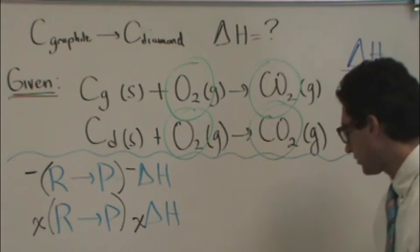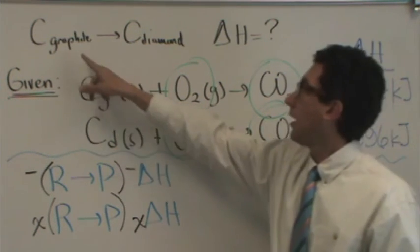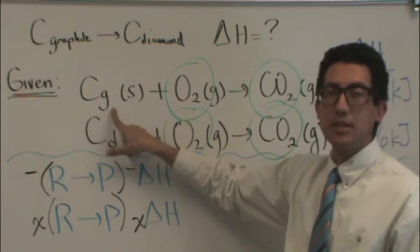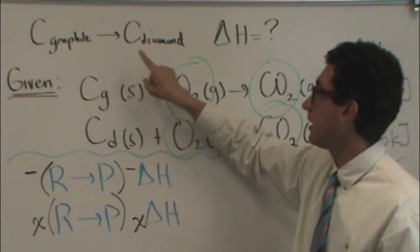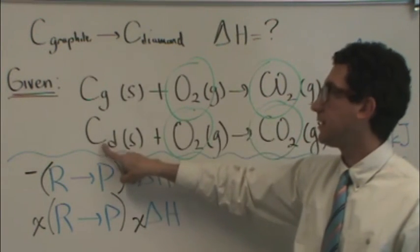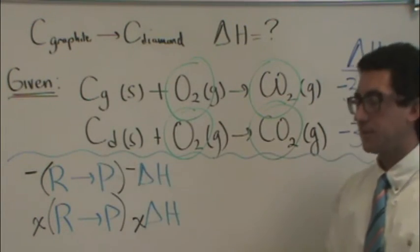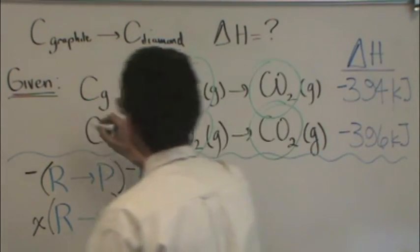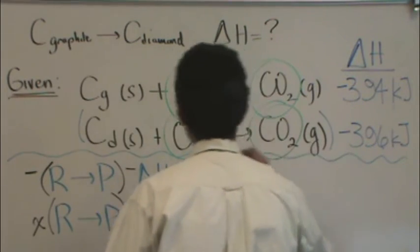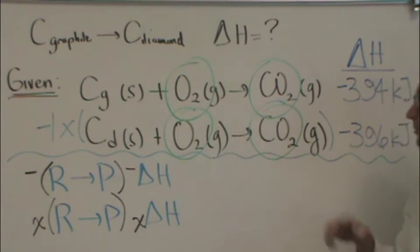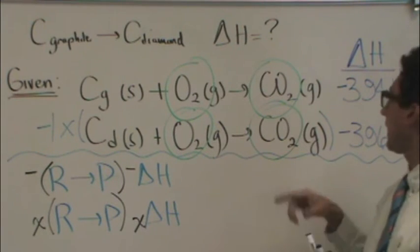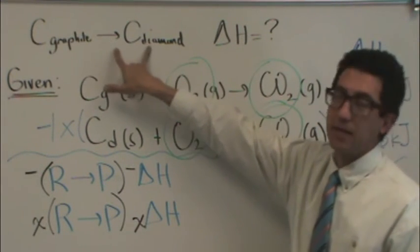So what you're going to have to do to figure this out is say, well, graphite, CG, needs to be in the reactants, which it is in the first reaction, but diamond, CD, is in the products up here but in the reactants down here. So what I'm going to need to do to this reaction right here is multiply by a minus 1. When I multiply by a minus 1, it, in essence, flips the reaction. You're going to see that all these intermediates will cancel out. And when you add these two reactions, it adds up to this one.